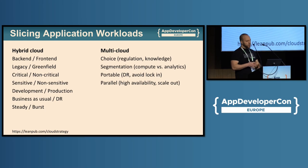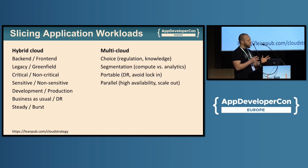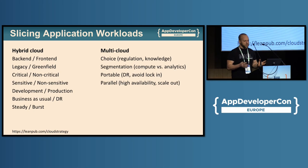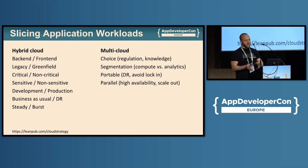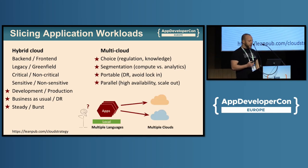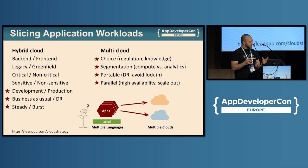If you have a multi-cloud setup using multiple public clouds, you might slice your application workloads based on cloud strength and cost. You may pick a cloud for its good analytics offering, another cloud for compute, or you might run workloads on parallel clouds. The point is that, as a developer, you may have to create applications that run on more than one cloud.